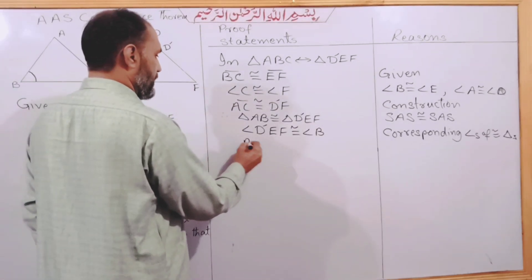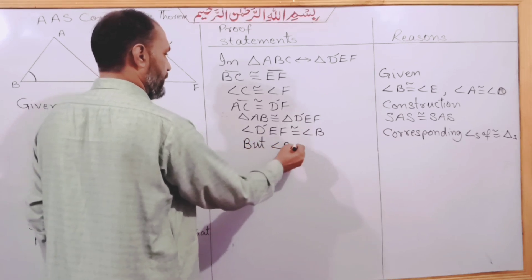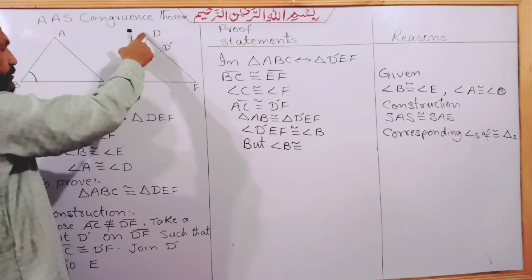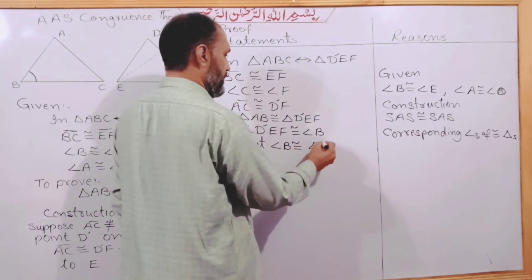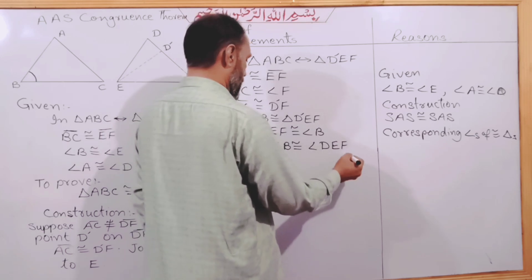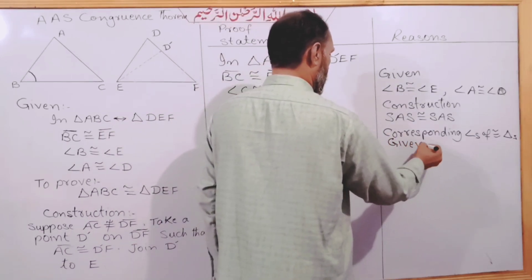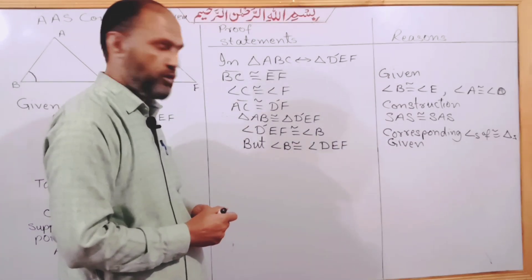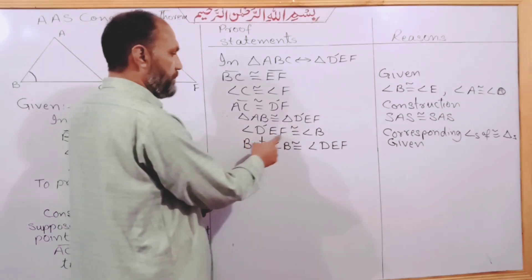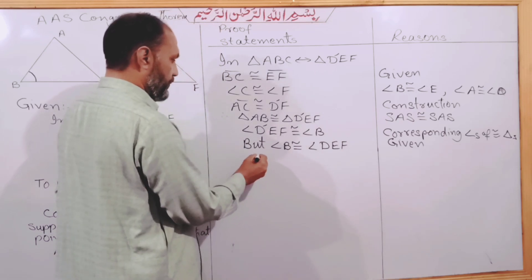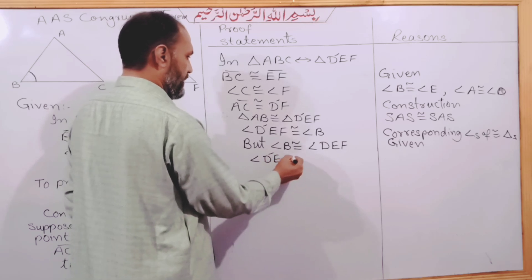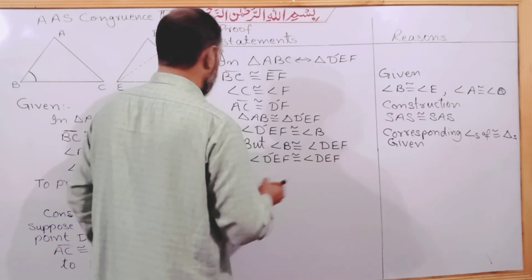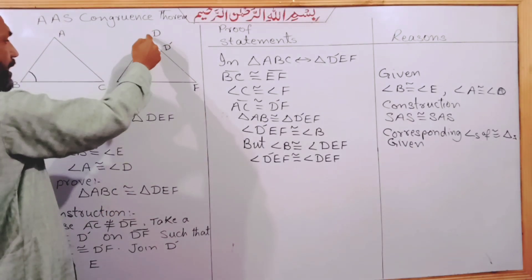Angle B is congruent to angle E. The construction gives us angle DEF. Angle D-prime EF is congruent to angle B, and angle B is congruent to angle DEF. By the transitive property, angle D-prime EF is congruent to angle DEF.